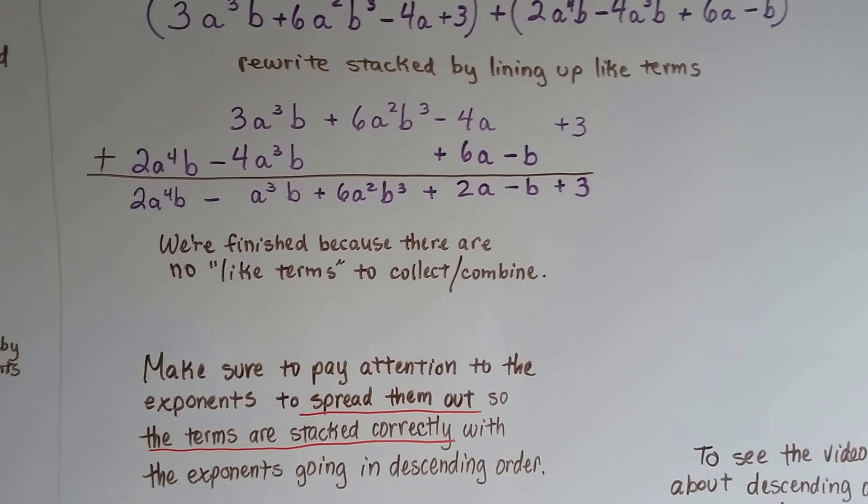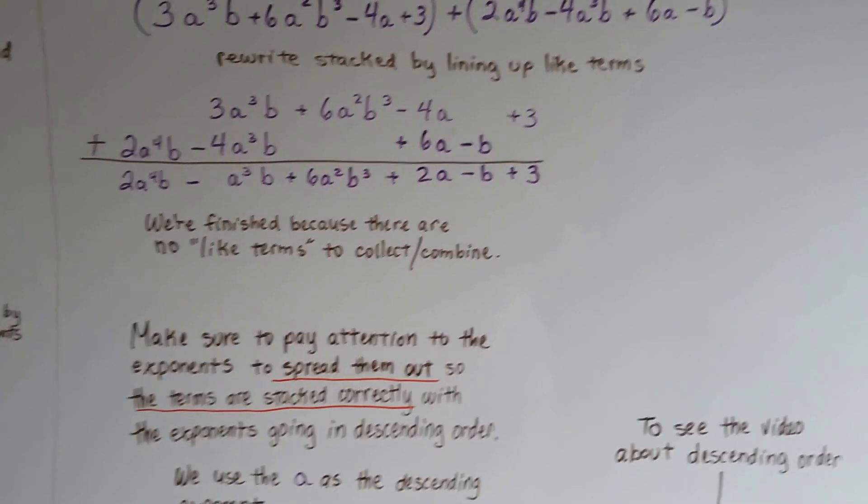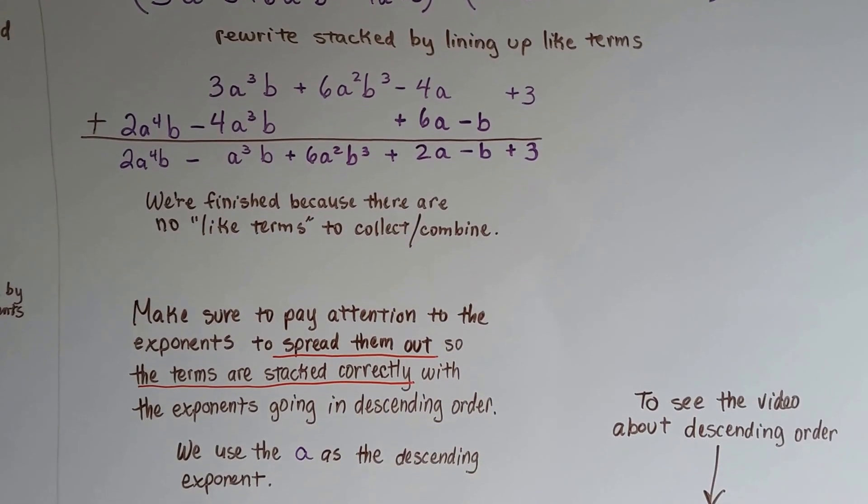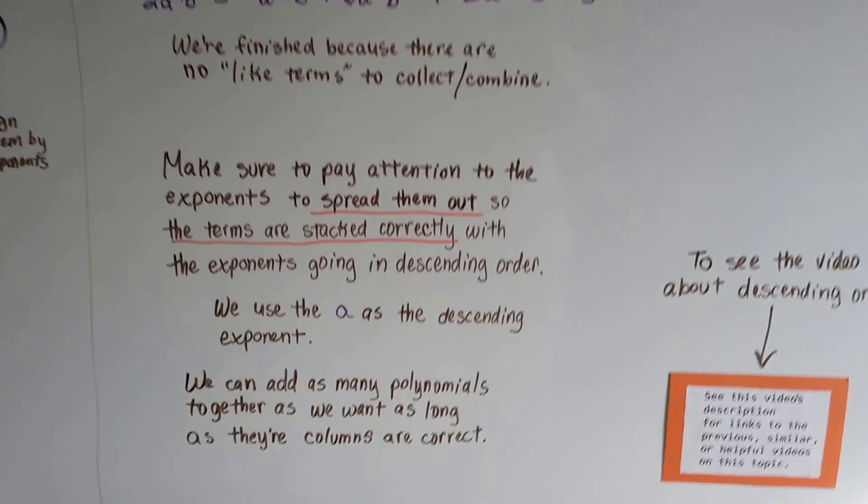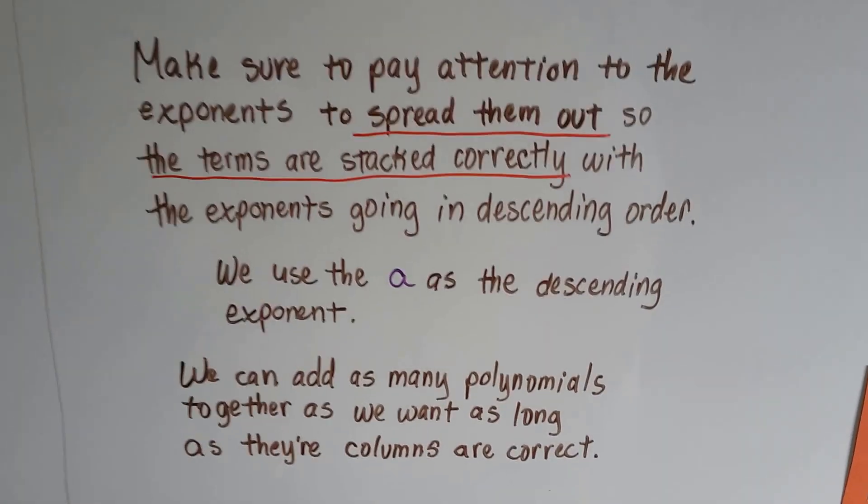You have to make sure to pay attention to the exponents and to spread them out. So the terms are stacked correctly with the exponents going in descending order from largest to smallest. We use the a as the descending exponent. We can add as many polynomials together as we want as long as the columns are correct.